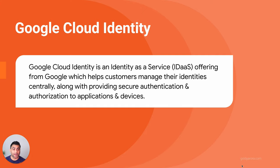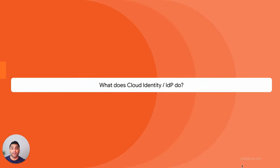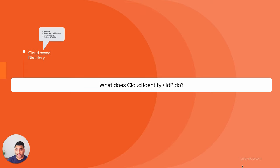What is Google Cloud Identity? It is essentially an identity-as-a-service offering from Google which helps customers manage their identities centrally. These identities may include users, groups, and members. As your centralized identity provider, number one, it is a cloud-based directory where you can manage your organizational units, users, groups, and members — just like you have been doing in traditional Microsoft Active Directory or OpenLDAP.